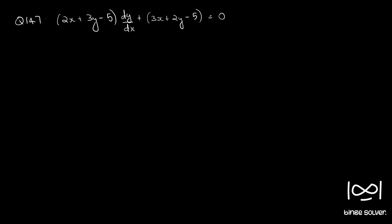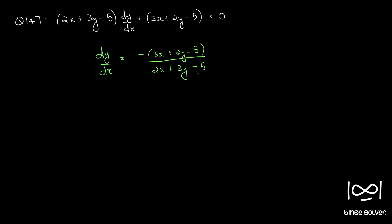Question number 147. We have the equation: 2x plus 3y minus 5, times dy by dx, plus 3x plus 2y minus 5 equals 0. Rearranging, we can write dy by dx as minus 3x plus 2y minus 5, divided by 2x plus 3y minus 5. Now this is not a homogeneous equation. We have to convert it into homogeneous form and then solve it. Let's call this equation 1.